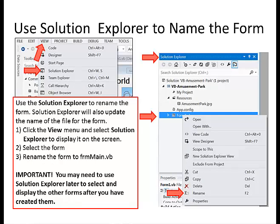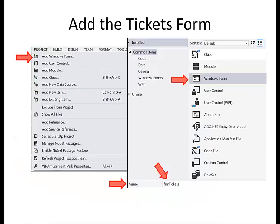Use the Solution Explorer to rename the form — Solution Explorer will also update the name of the file for the form. Click the View menu and select Solution Explorer to display it on the screen. Select the form and rename it to FrmMain.vb. This is important — you may need to use the Solution Explorer later to select and display the other forms after you have created them.